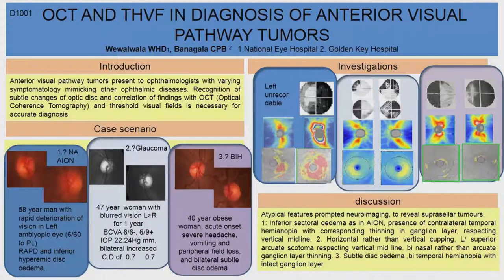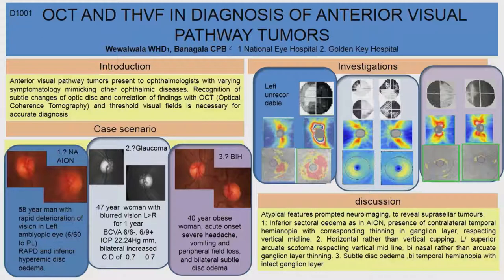The third case presented with severe headache, vomiting, and she casually mentioned a peripheral field loss. The optic disc showed very subtle edema giving an impression of benign intracranial hypertension. But her visual field confirmed a bitemporal hemianopia, and with minimal thinning of the ganglion cell layer, she was imaged and found to have a pituitary tumour, which was medically treated.